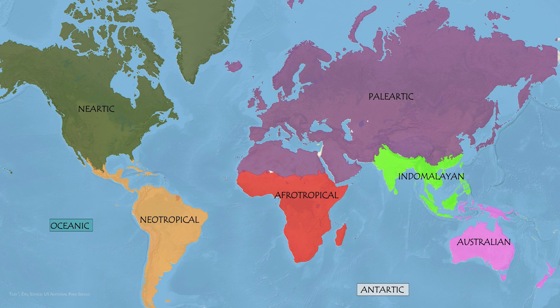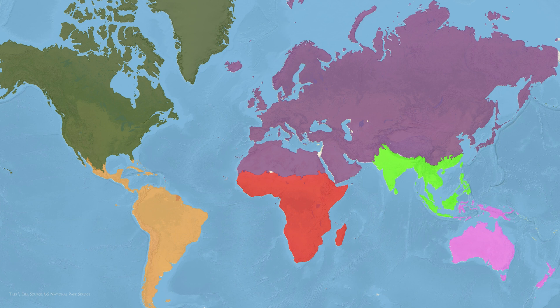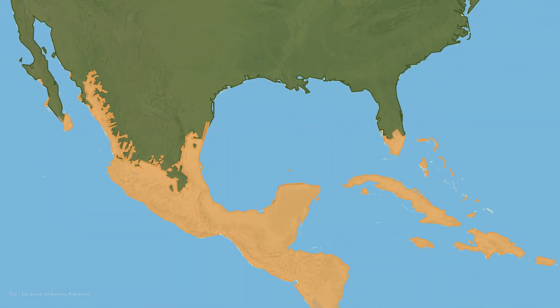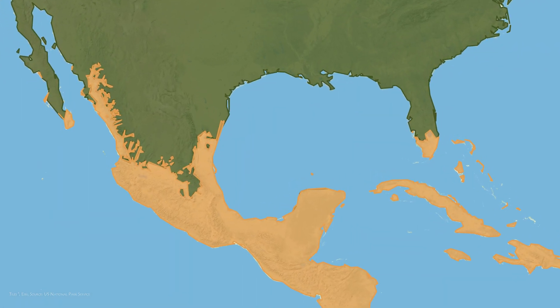Biogeographic realms are large areas of Earth's surface where organisms have evolved in relative isolation over long periods of time, and are separated by geographic features such as deserts, oceans, or mountains. The Americas are split into two separate realms, with the Nearctic consisting of North America and the Neotropical of South America, which was isolated for over 50 million years. Where these two realms split is not super clearly defined, but commonly has the rainforests of Mexico to the south along the coast as the Neotropical region, and the mountains and deserts of Mexico as the Nearctic. These two landmasses are now connected but have quite different species due to the continents coming into contact as recently as 3 million years ago.